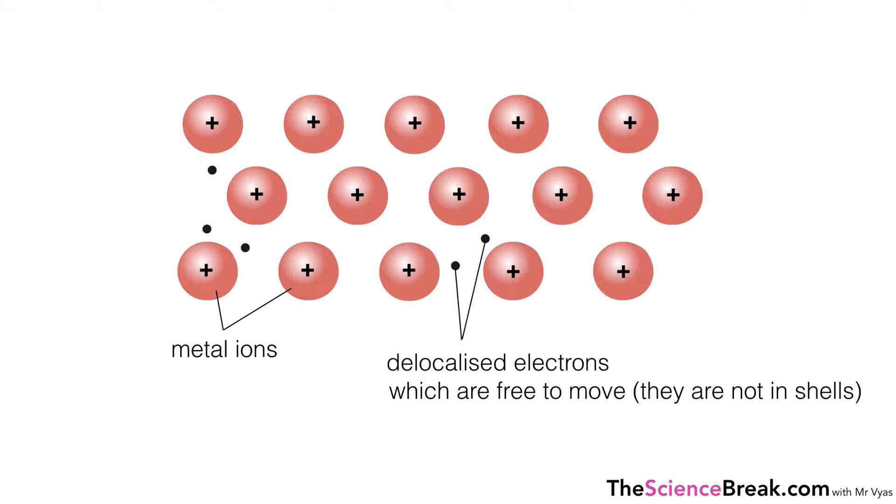These are free to move because they're not in shells. If we were to put a charge across this piece of metal, the electrons because they're free to move would move throughout the structure like so. And this is how the electrons carry charge and how the metal would conduct electricity.